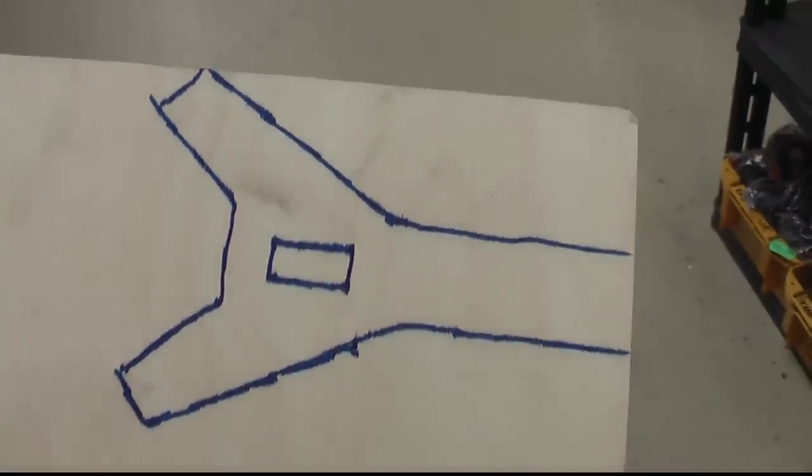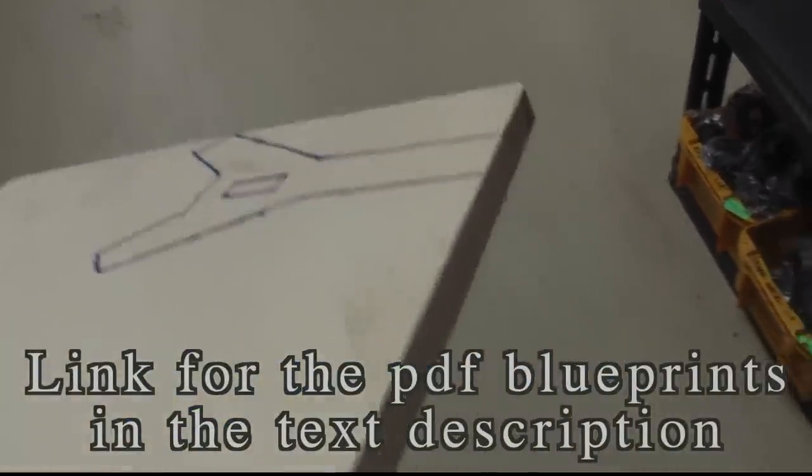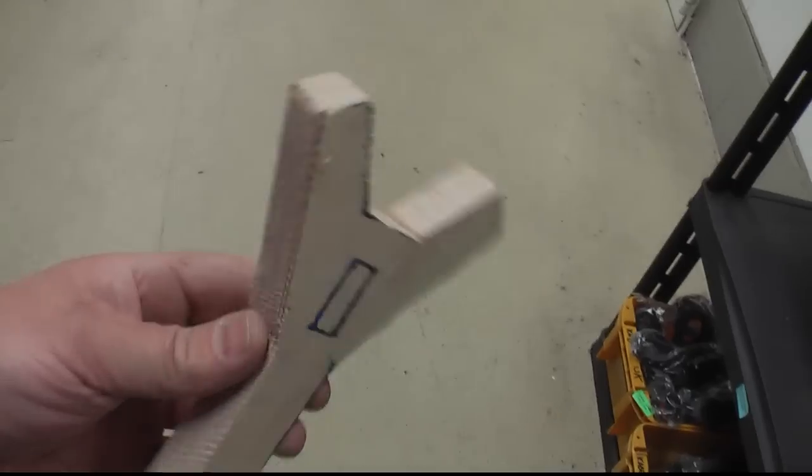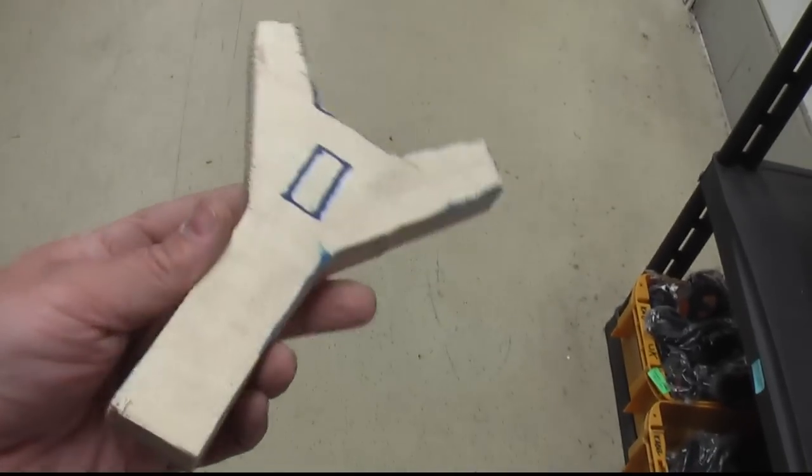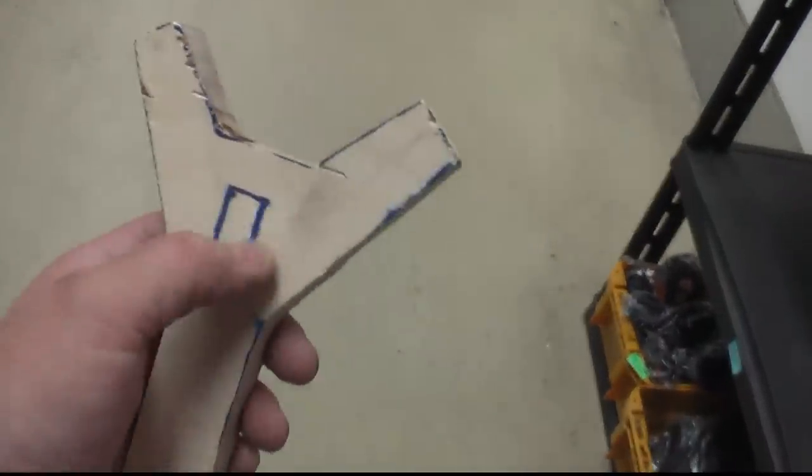So, first we transfer the shape of the slingshot frame to the thick multiplex board. And saw it out. So now we sawed it out. It's time to round it. And also to make the center hole.